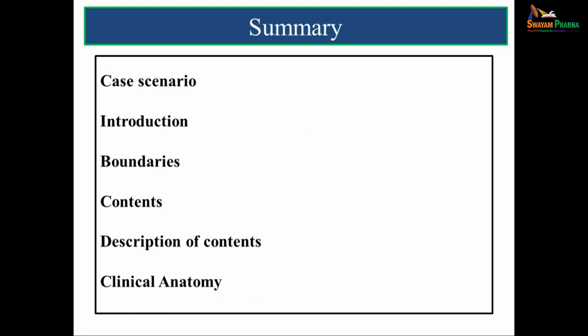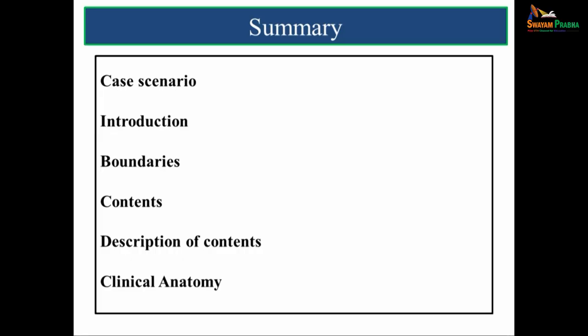In summary, we started with a case scenario of foot drop, then discussed the muscles of the back of the thigh and the hamstrings, then the calf muscles, the boundaries of the popliteal fossa, the contents, description of the contents, and finally the clinical anatomy. Thank you.